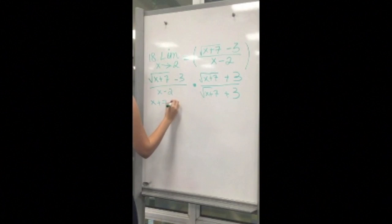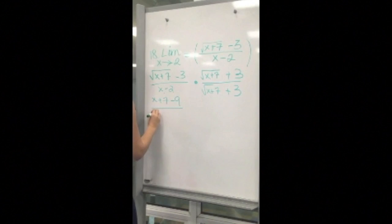On the bottom, you just multiply x minus 2 by square root of x plus 7 plus 3.